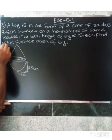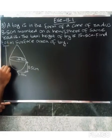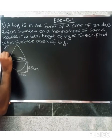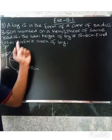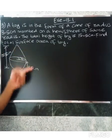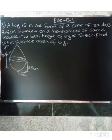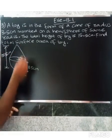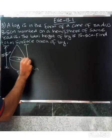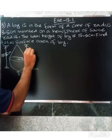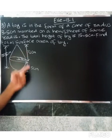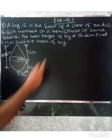The total height of the toy is 15.5 centimeters. Since the radius of the hemisphere is 3.5 centimeters, the height of the cone equals 15.5 minus 3.5, which equals 12 centimeters.